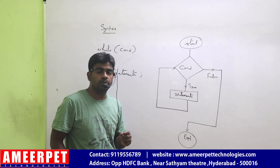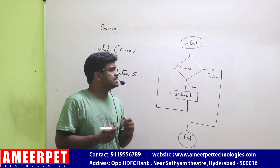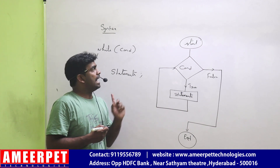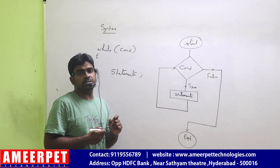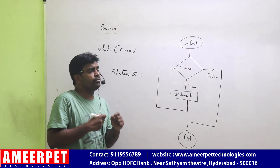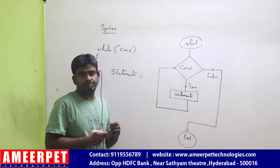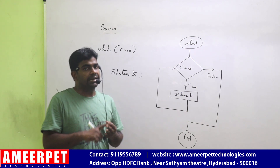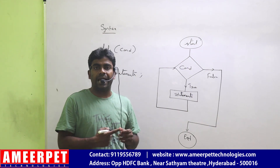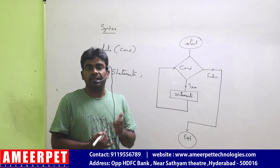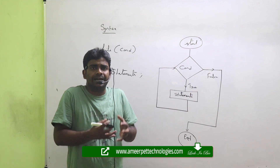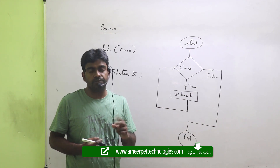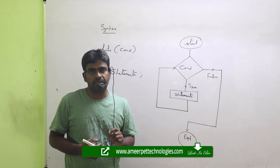This is the syntax and flow of how the while loop executes. We'll see many examples on digits first, and also menu-driven examples using the while loop. Before working with digits, we'll cover: count the number of digits, sum of digits, palindrome number, strong number, Armstrong number, Adam number, and lucky number.